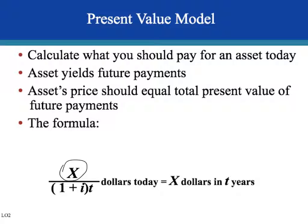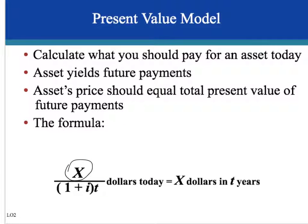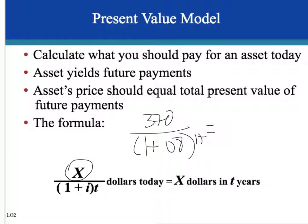So this asset yields future payments. Let's say there's an asset that is guaranteed to pay $370 in 17 years, and let's say interest is 8%. Now we know that an investor would not pay more than $100 for this asset, because they could invest $100 in another investment that could give them an 8% return.